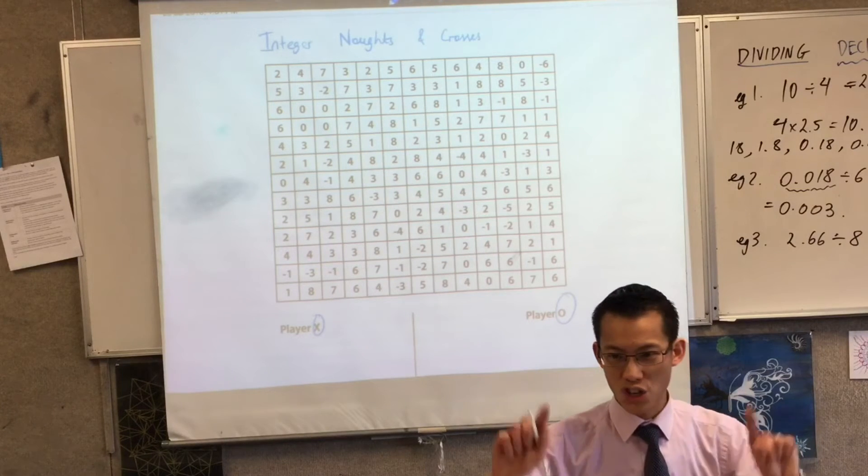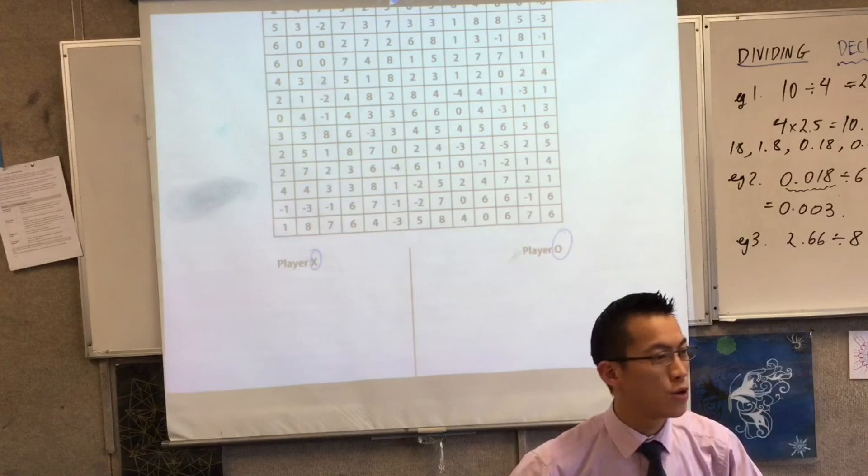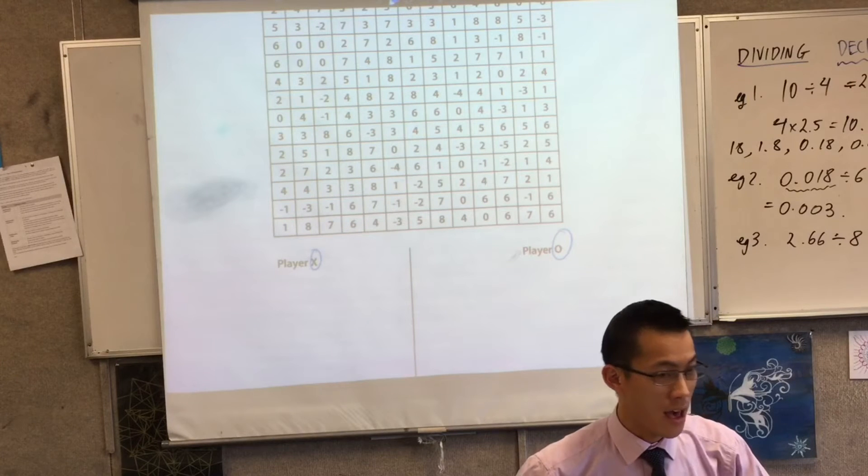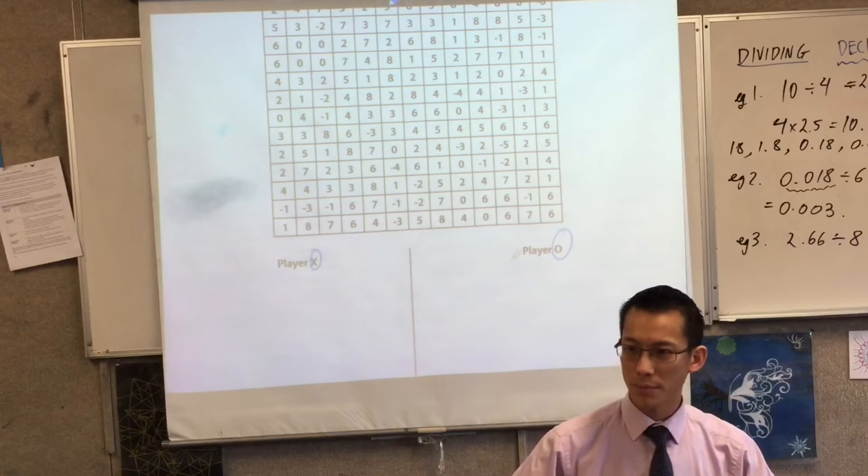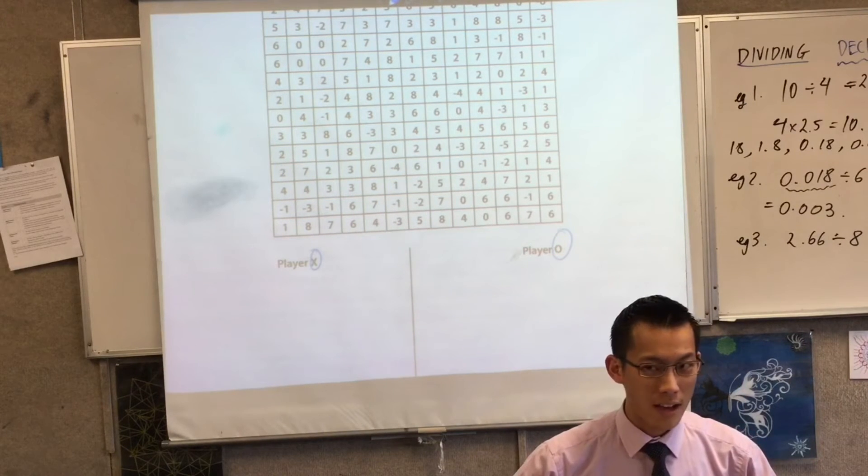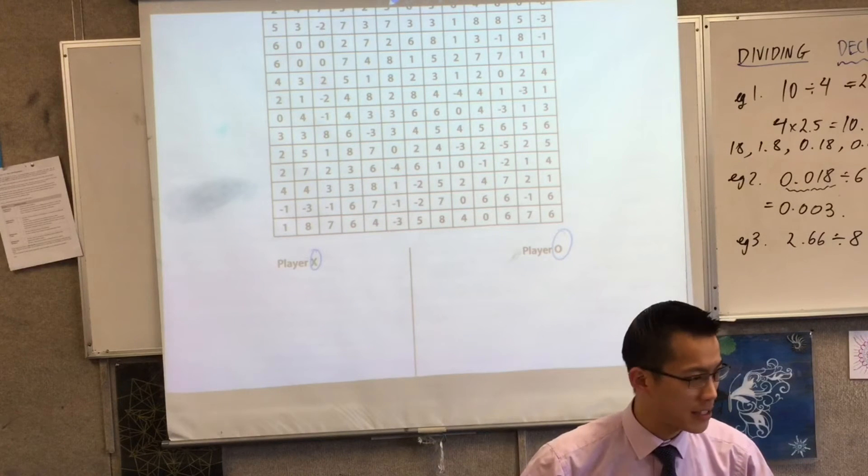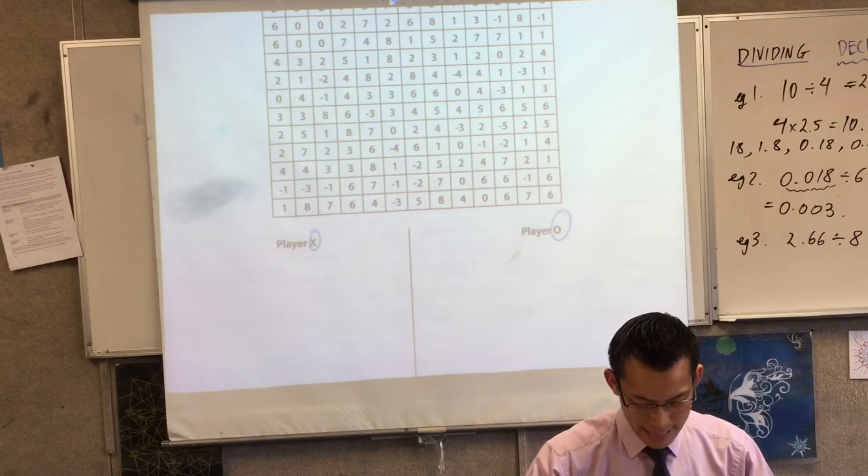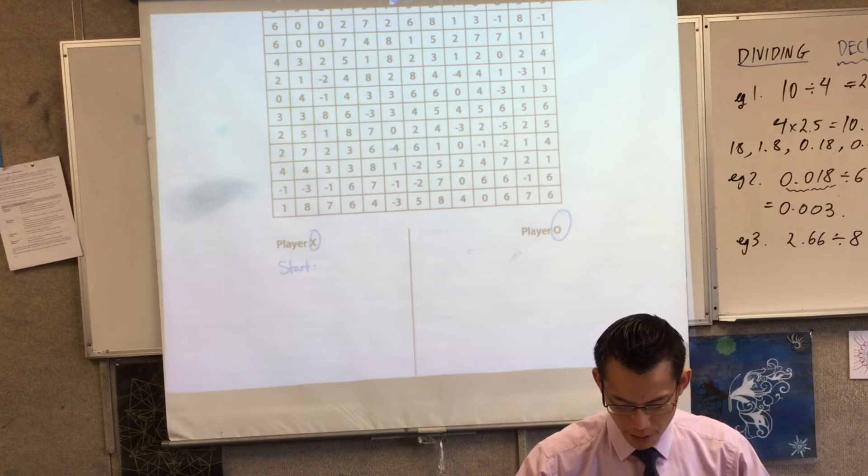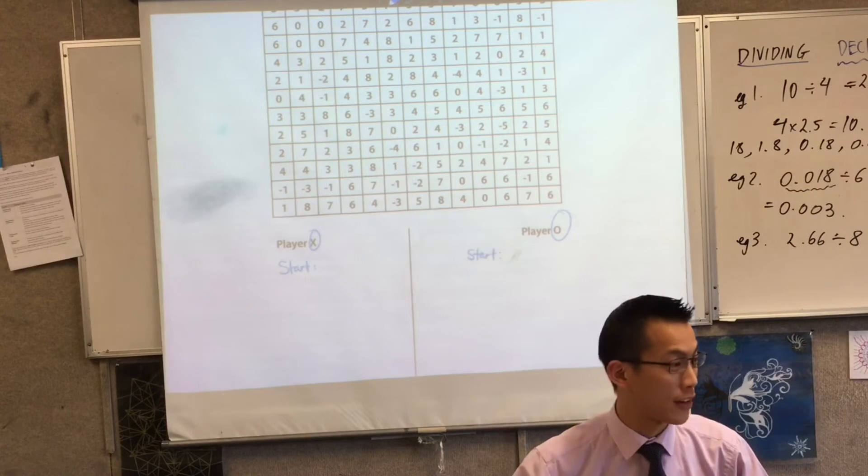Here's the way it works. Silently, I want you to decide who's the Noughts player and who's the Crosses player. And I want each player to randomly select a number from one to ten. I'm going to write down a start number for both of these people because I have to play both sides up the front here.